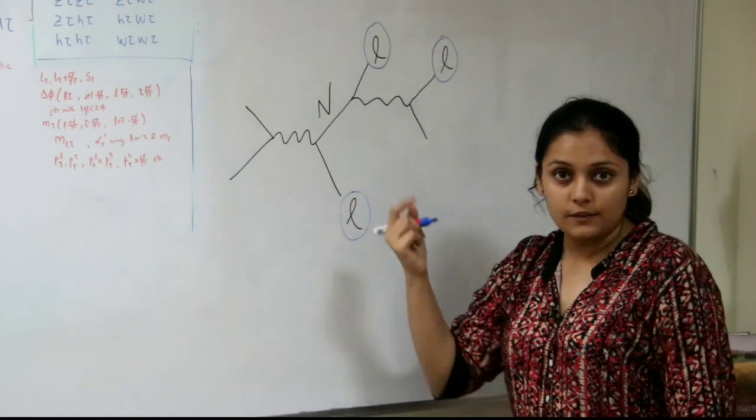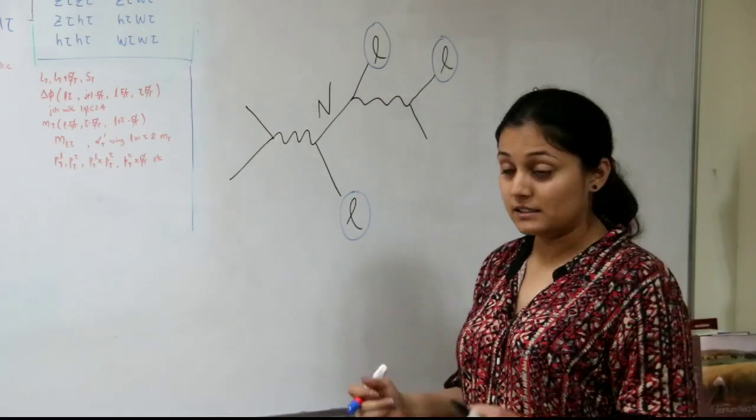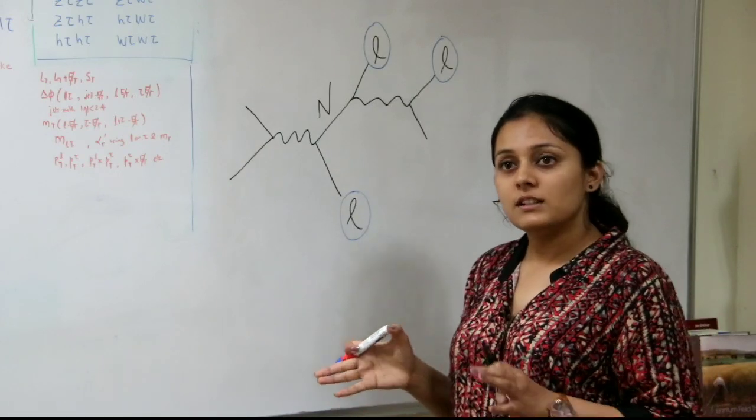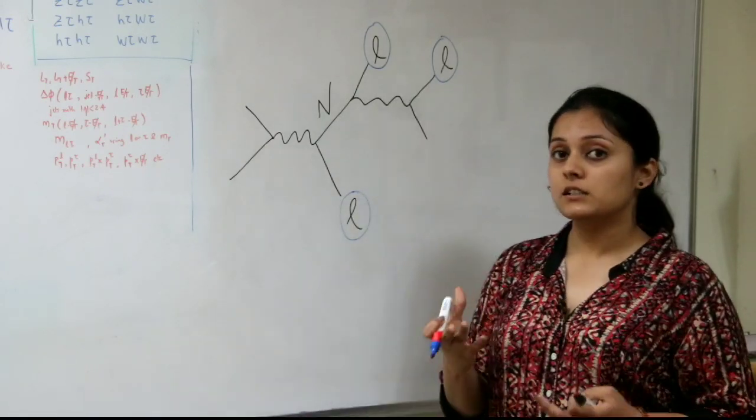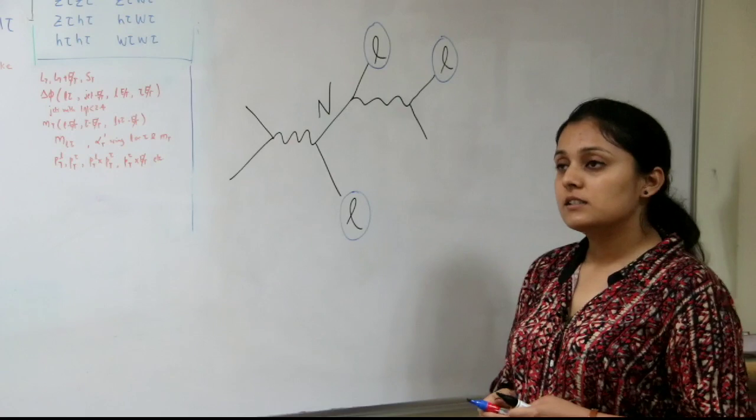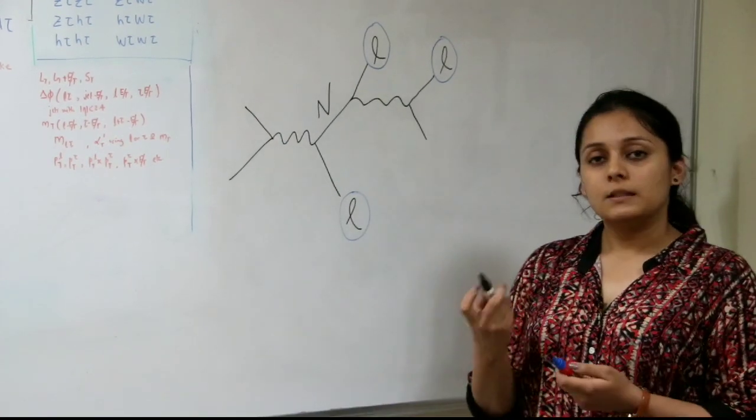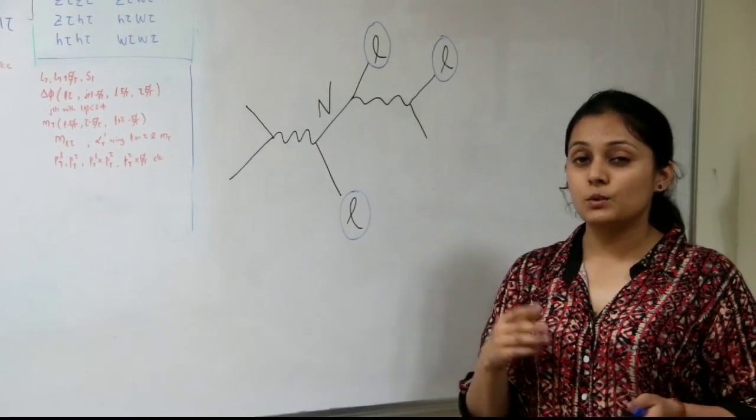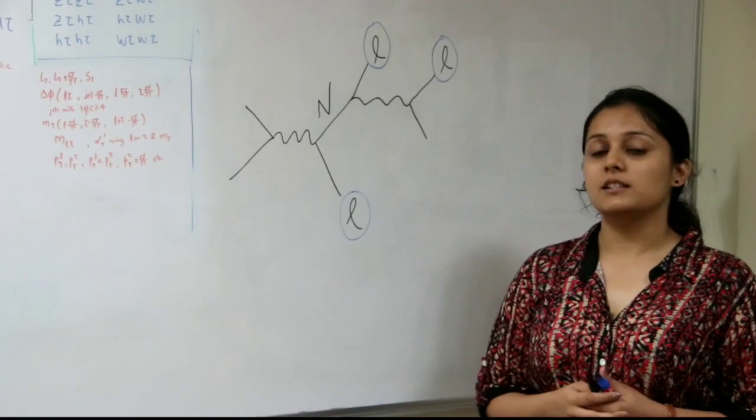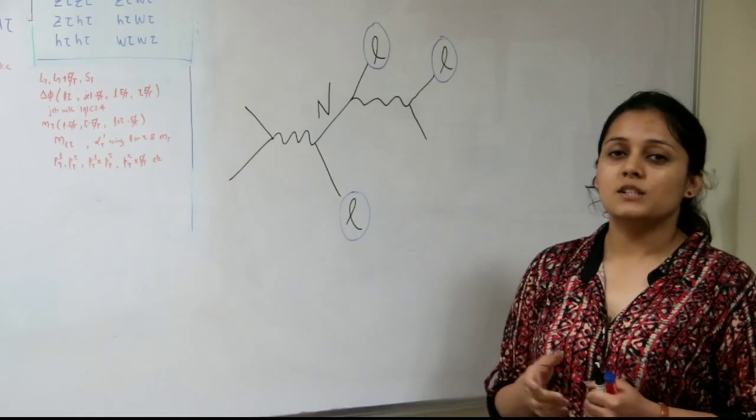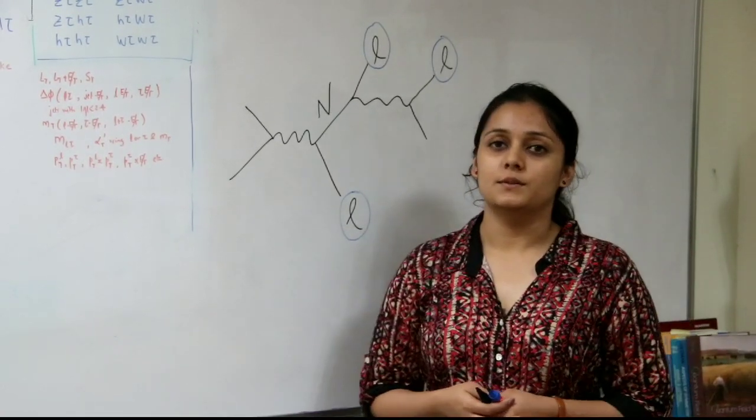So we can search for these heavy neutrinos in a multi-lepton final state and this multi-lepton analysis actually gives a very clear signature through which you can find signs of new physics. So in my talk I am going to talk about how to construct a multi-lepton analysis and through these kind of analysis you can search for new particles which can solve some of the mysteries of the universe. Thank you.